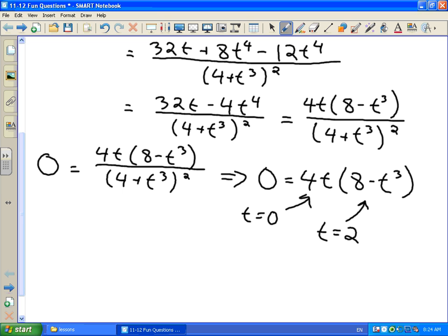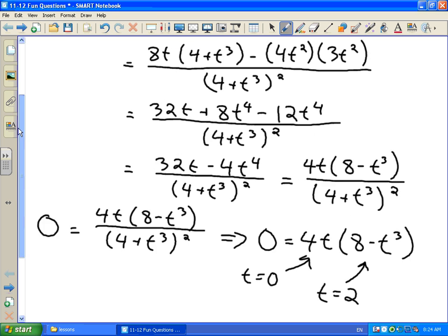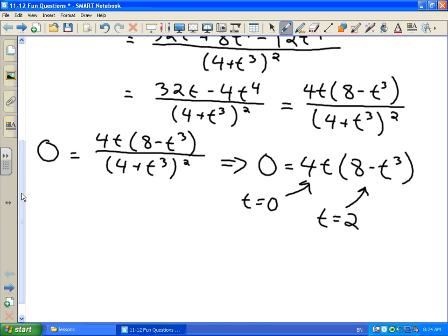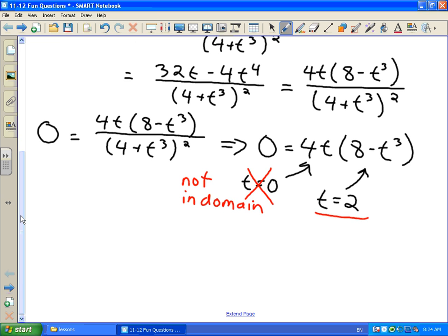Now, there's a bit of an issue here because if we look at our two solutions, t = 0 and t = 2, if we go back up to our original question, we see that our domain here is actually limited to t values between 1 and 4. So this function v(t) only applies for t values from 1 to 4. So this t = 0 isn't really a critical number because it's not in our domain. So we only have this critical number, t = 2, that we have to consider as a possible maximum or minimum.